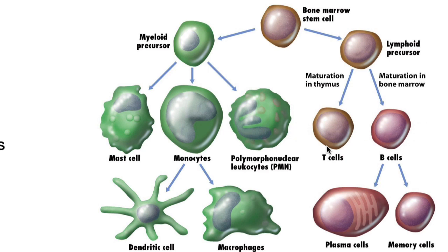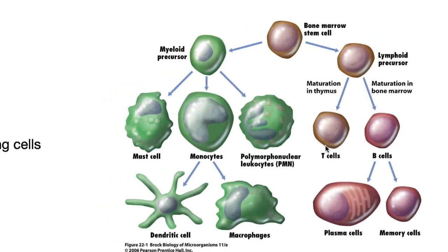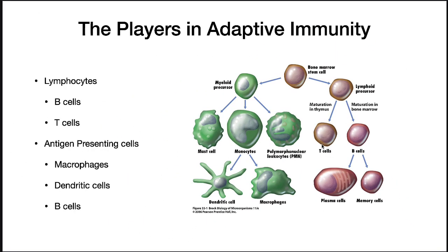So there are two types of lymphocytes: B cells and T cells. Antigen presenting cells then present antigens to these cells. And these are macrophages, dendritic cells, and B cells.